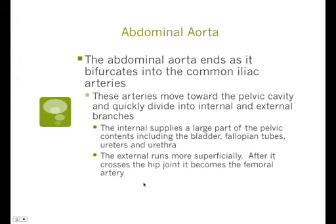The abdominal aorta ends as it bifurcates into the common iliac arteries, which move toward the pelvic cavity and quickly divide into internal and external branches. The internal iliac arteries supply a large part of the pelvis, including the bladder, fallopian tubes, ureters, and urethra. The external iliac artery runs more superficially and crosses the hip joint to become the femoral artery.